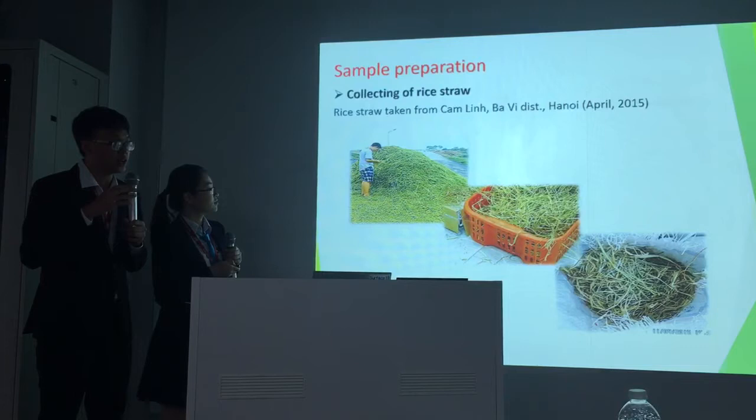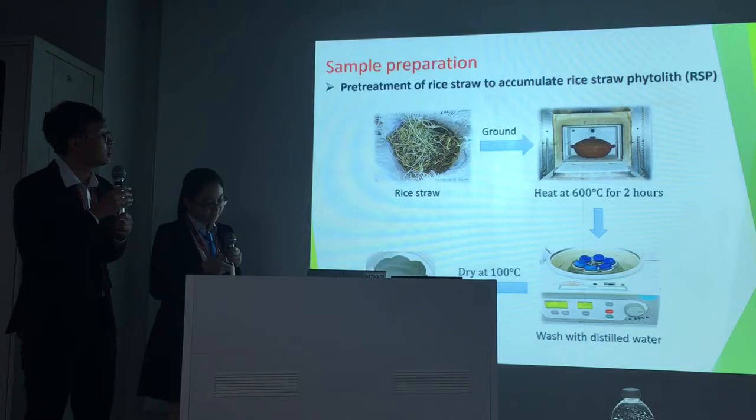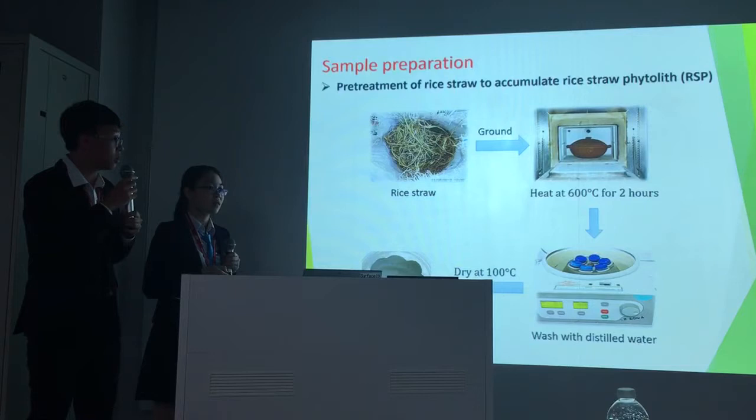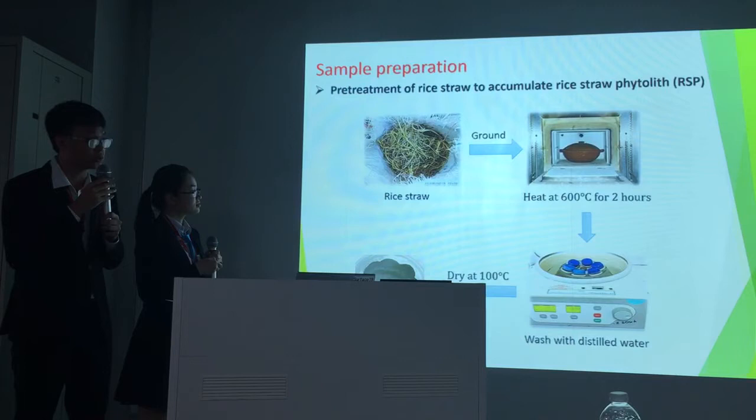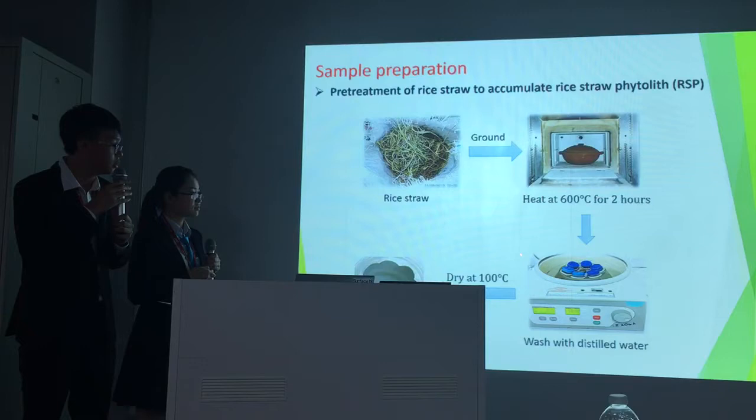We collected the rice straw samples in Hanoi. To pre-treat the rice straw phytolith, we follow this process. First, our rice straw was ground and heated at 600 degrees Celsius for 2 hours. Next, it was washed with distilled water and finally dried at 100 degrees Celsius.